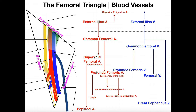This artery descends downward out of the femoral triangle and into another structure called the adductor canal — the topic of the next video. It continues through the adductor canal, and once it reaches the popliteal region (the posterior part of the knee), it changes its name to the popliteal artery.